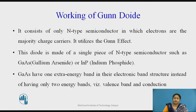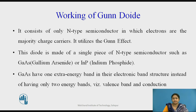Working of the Gunn Diode. As previously discussed, it consists of only n-type semiconductor material, in which electrons are the majority carriers. These electrons form and generate the current, and this device utilizes the Gunn effect. Now, what is the Gunn effect? Let us discuss it in the next slide.